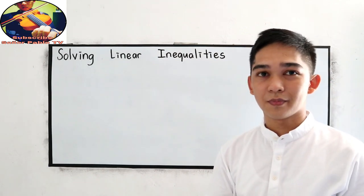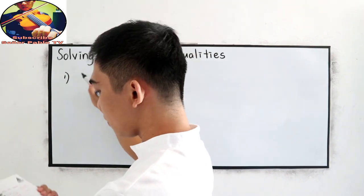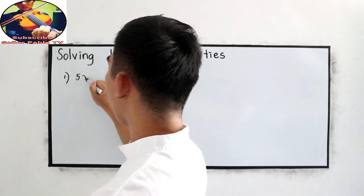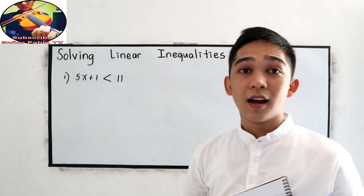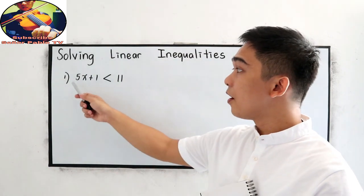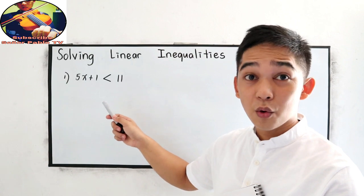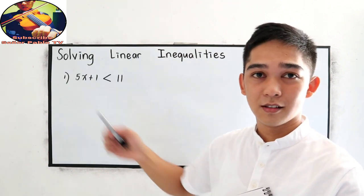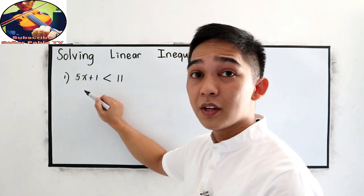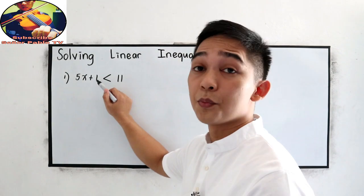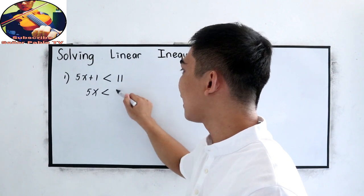Our topic is solving linear inequalities. Let's try to solve number 1: 5x plus 1 is less than 11. We are going to solve for x. Let us use the addition property of inequality and subtract 1, so 5x is less than 11.